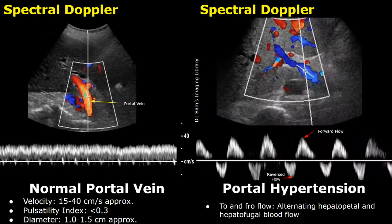In some cases of portal hypertension we may find to-and-fro flow, which is an alternating forward and reversed flow. We will get a biphasic waveform on spectral Doppler consisting of forward flow and flow reversal. This is a combination of alternating hepatopetal and hepatofugal blood flow and can be seen in severe cases of portal hypertension.